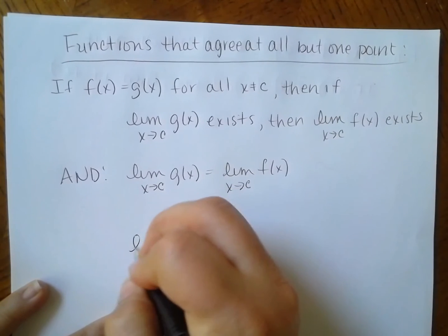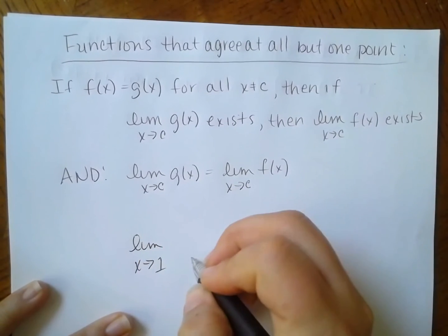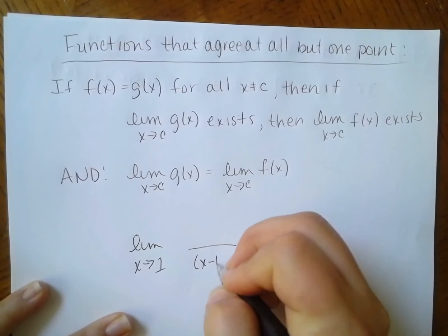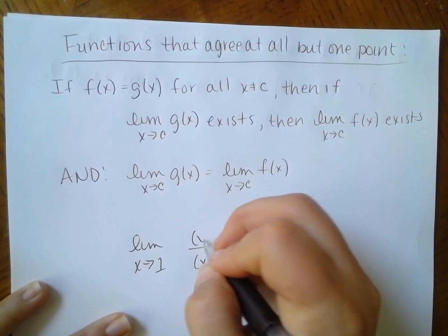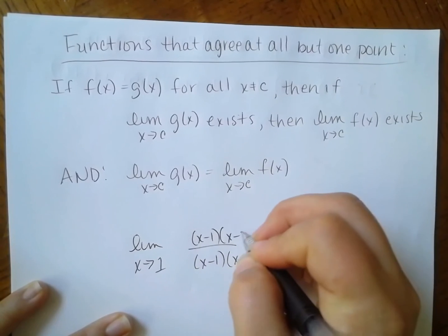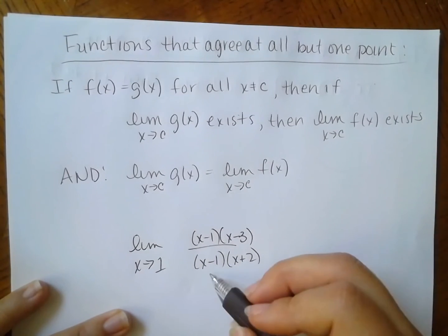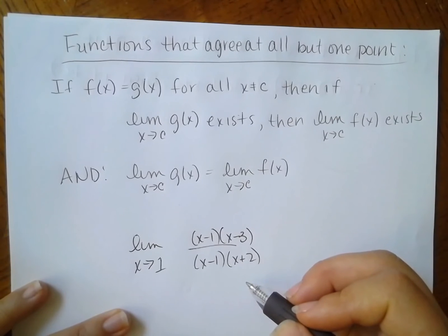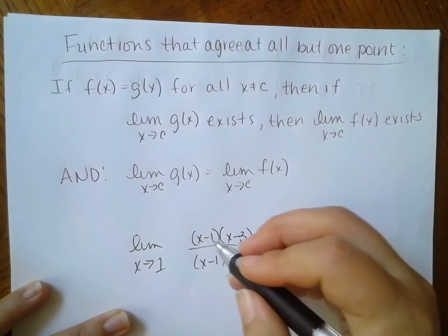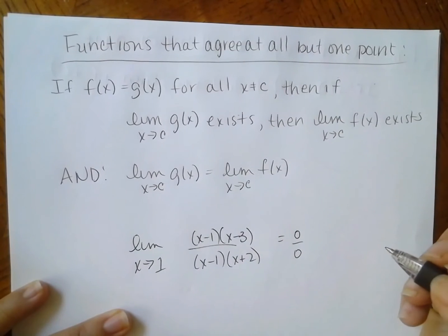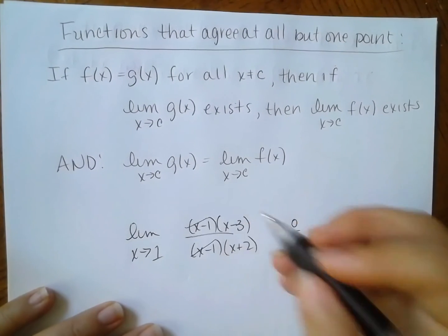For instance, if I had the limit as x approaches 1 of (x minus 1)(x plus 2) over something — when I plug in 1, I get division by zero; but when I plug in 1 on the top I also get 0 because 0 times whatever gives 0. So this is indeterminate form, but I can simplify these two factors.